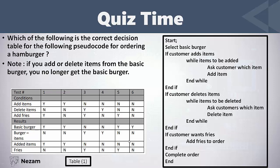Looking at table number one: this table contains only six test cases. We said we may reduce the number of test cases by using 'don't care' or by removing cases that will not happen in real life. But here he removed the test case where we added an item, deleted an item, and added fries — and this case would happen in real life. This is why this table is wrong.